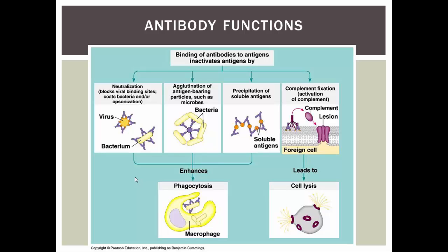Another thing antibodies can do is cause agglutination, like we saw with cross-matching blood. The antibody binds to antigenic determinants on more than one antigen. With bacteria all agglutinated and bunched up, they can't function properly.